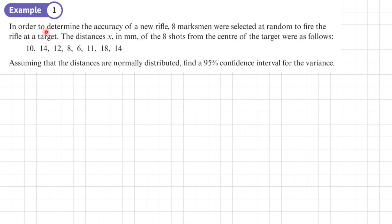Example 1. In order to determine the accuracy of a new rifle, 8 marksmen were selected at random to fire the rifle at a target. The distances x in millimeters of the 8 shots from the center of the target were 10, 14, 12, 8, 6, 11, 18, and 14.